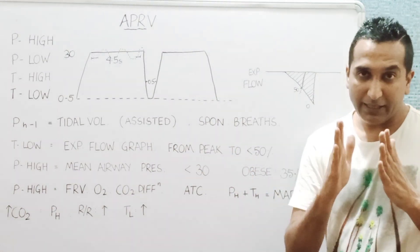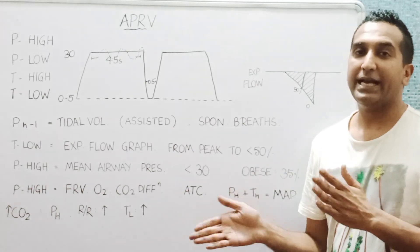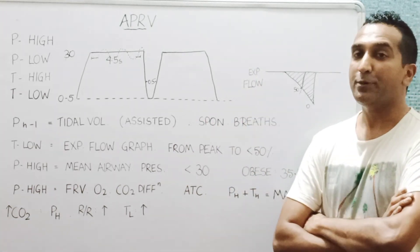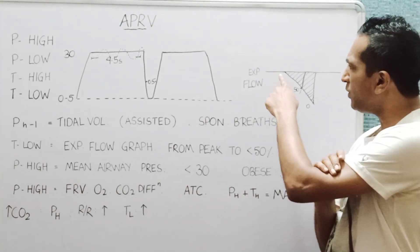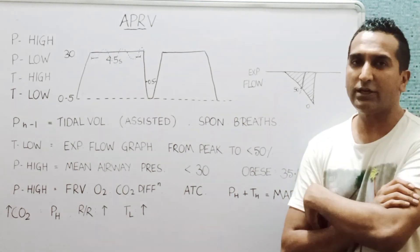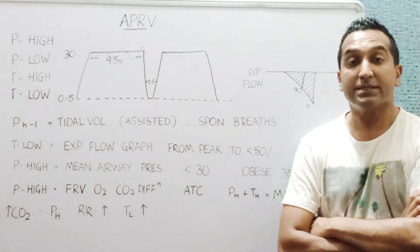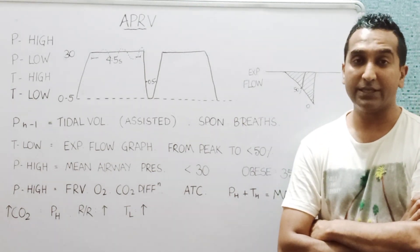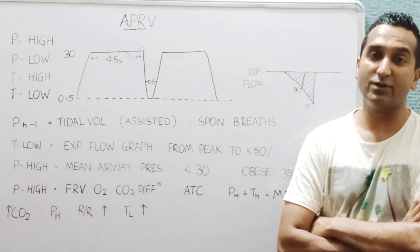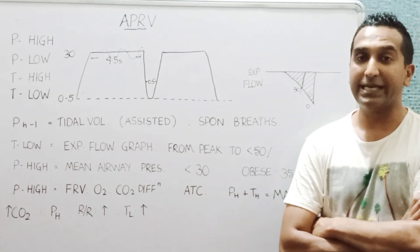It is at that point we should abort the T low and start the new breath, or maybe limit the release to that amount and let the pressure rise again to P high. Because if we allow the flow to fall beyond that, then there is possibility of de-recruitment, and we know de-recruitment and re-recruitment will lead to greater lung injury.